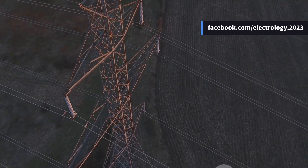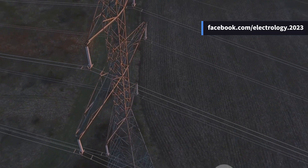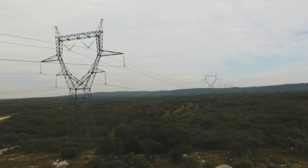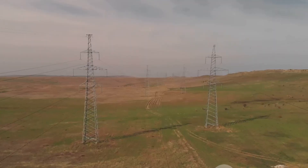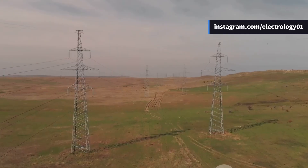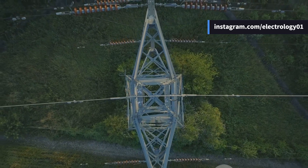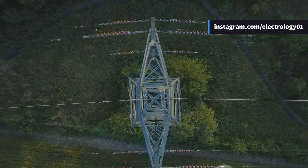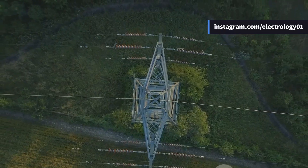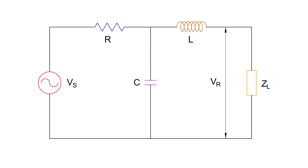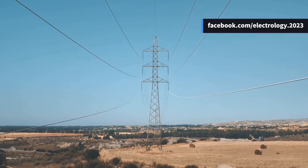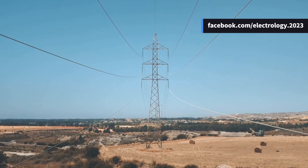Whenever we talk about transmission lines, we imagine those giant overhead conductors stretching across fields, valleys and rivers, carrying electric power from one city to another. But these conductors are not just passive wires. Along their entire length, three invisible companions travel with them, shaping the performance of the line: resistance, inductance and capacitance. These are called the constants of the transmission line, and they are the reason why power transmission is not as simple as connecting two ends of a copper wire.